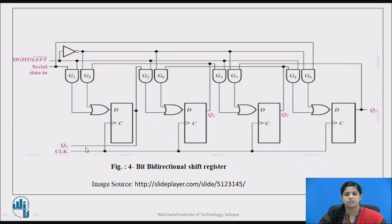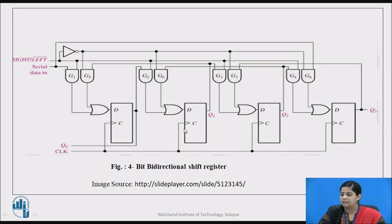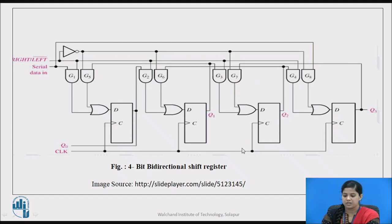The connections are as follows. Output Q0 is fed to gate G2 of the input logic of the next flip-flop. Output Q1 is fed to G3, which is the input logic of flip-flop D2, and so on. Each and every output of the previous flip-flop is fed to the input logic of the next flip-flop. Additionally, the output Q3 — the output of the last flip-flop — is fed back to gate G7, which is the input logic of the previous flip-flop D2. Each output of the next flip-flop is fed back as input to the previous flip-flop, so two-way connections are present.